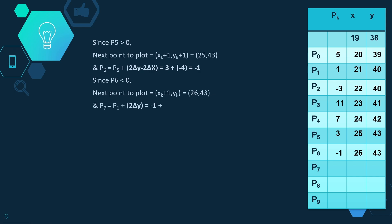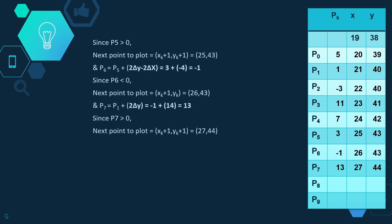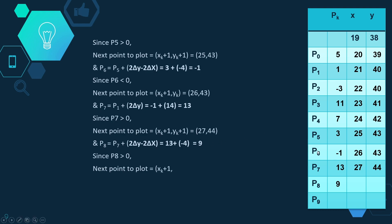p7 = p6 + 2 delta y = minus 1 + 14 = 13. Since p7 > 0, we increment both x and y: the next point is (27, 44). p8 = p7 + 2 delta y minus 2 delta x = 13 + (minus 4) = 9. Since p8 > 0, we increment both coordinates: the next point is (28, 45), which is our final endpoint.